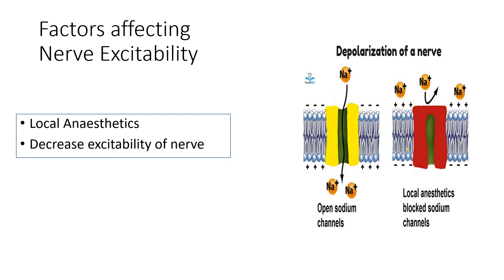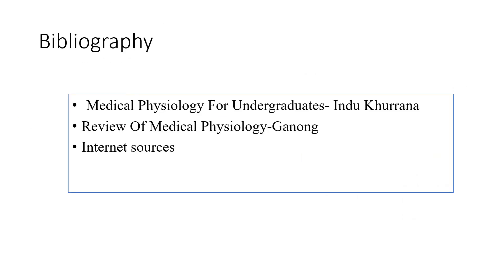Another factor affecting nerve excitability is local anesthetics. Local anesthetics decrease the excitability of the nerve by blocking the sodium channel — resulting in no sodium influx, no depolarization, and no generation of action potential.